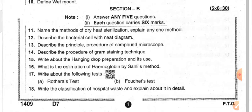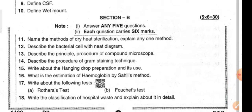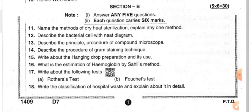Next section B questions: name the methods of dry heat sterilization. Sterilization is the complete destruction of organisms, making materials free from infection. Explain any one method. Sterilization can be physical or chemical.